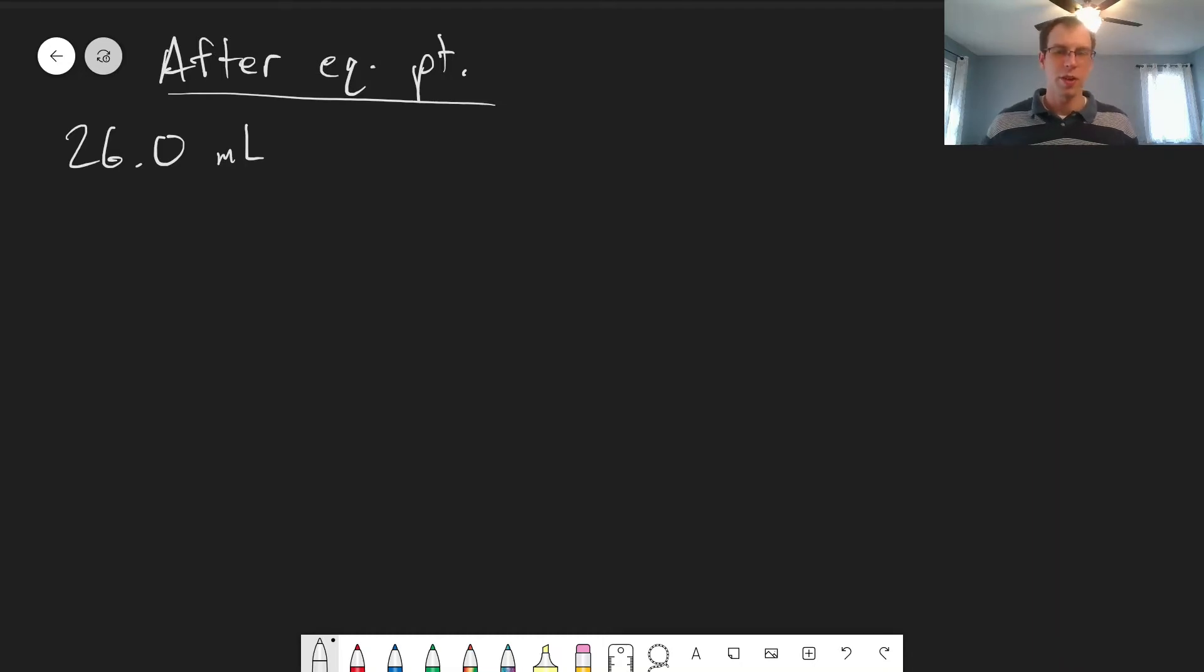The last part of the titration curve we're going to look at is after the equivalence point. Let's imagine it's 26 milliliters - we've added one extra milliliter, so now we have excess EDTA.